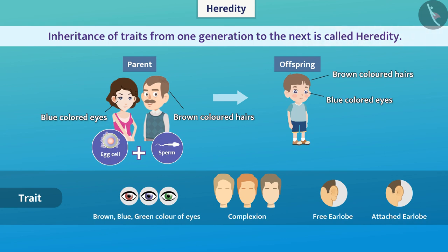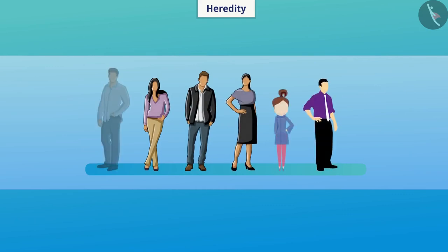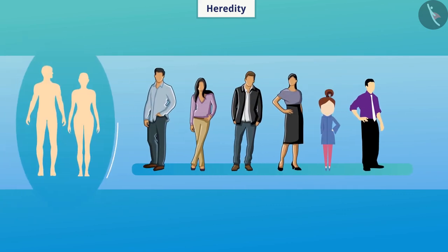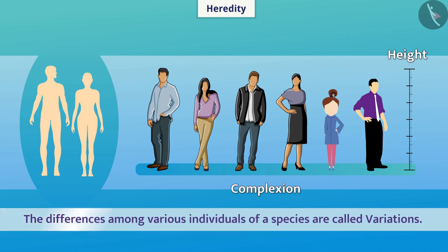If we look at the living organisms of a species, they do not look alike. Their basic structure is similar but they differ from each other in characteristics such as height, complexion, etc. The differences among various individuals of a species are called variations. Over generations, variations also get accumulated.